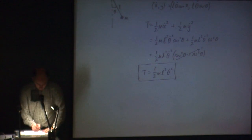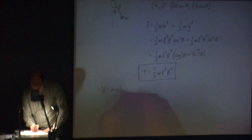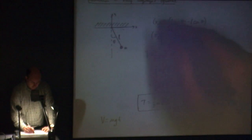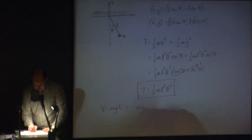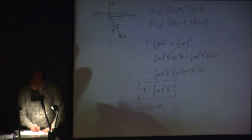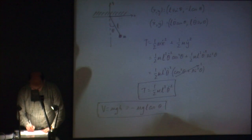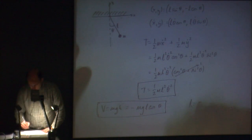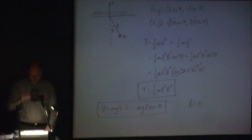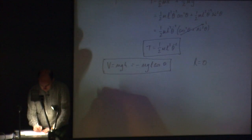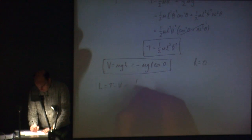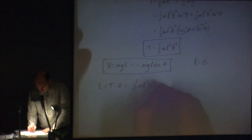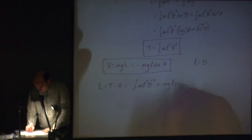V is relatively straightforward by comparison. V = mgh, and the h distance here is simply going to be my y term, so that's going to be minus mgl cosine theta.